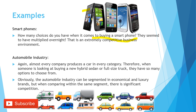Another example of an extremely competitive environment is the automobile industry. Almost every company produces a car in every category — Vauxhall, Ford, BMW, Audi all produce nearly similar cars in different categories. Therefore, when someone is looking at buying a new hybrid sedan or full-size truck, they have so many options to choose from. The automobile industry can be segmented into economical and luxury brands, but when comparing within the same segment, there is significant competition.